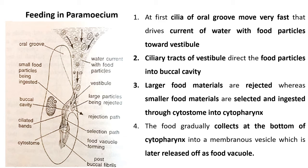The food gradually collects at the bottom of the cytopharynx into a membranous vesicle which is later released as a food vacuole. Whenever the food particle is present just outside the body, with the help of the pellicle they can ingest the food particle into the body; that process is called pinocytosis.